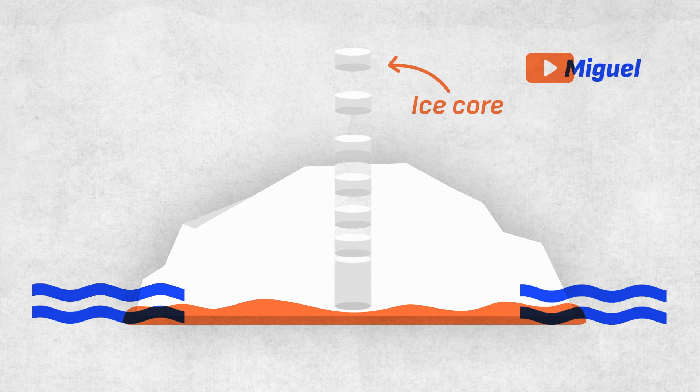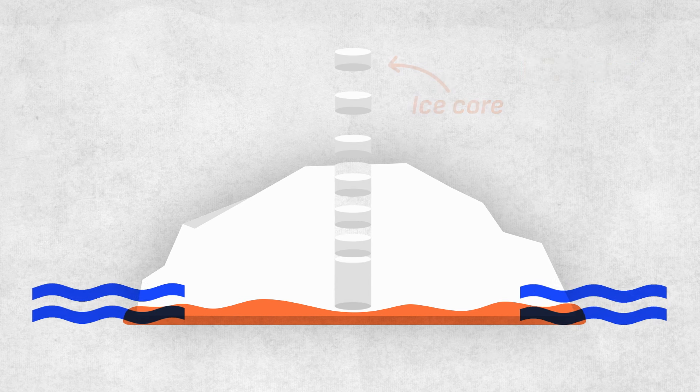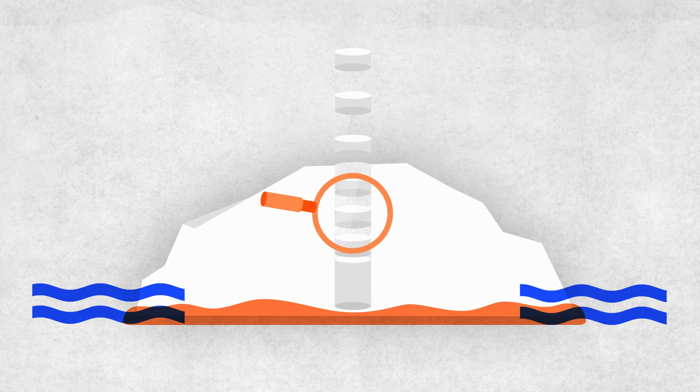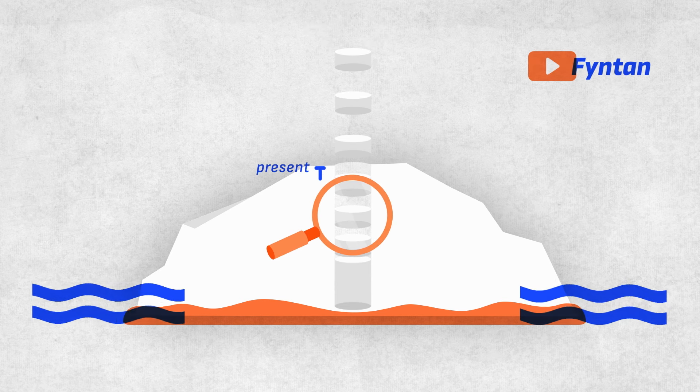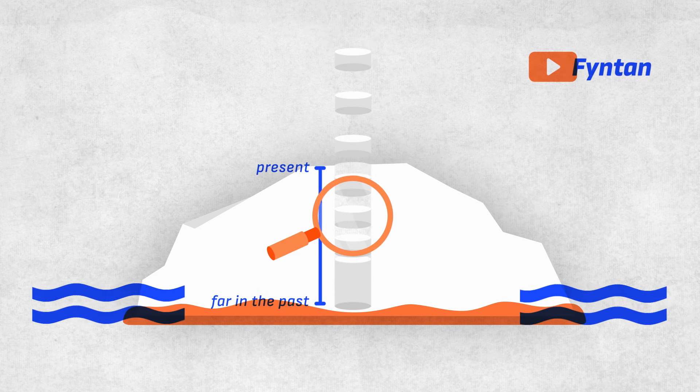Many of its properties depend on the climate when the snow fell. Therefore, the ice core is a climate archive where the surface is the present and the deepest part is far in the past.